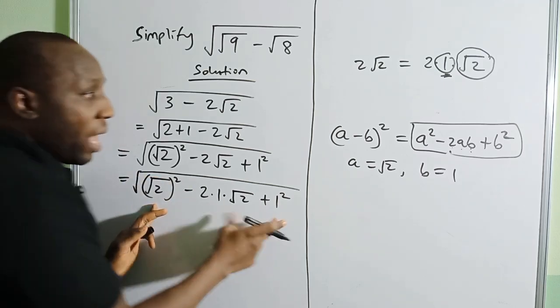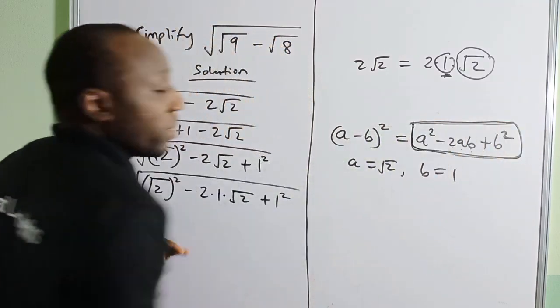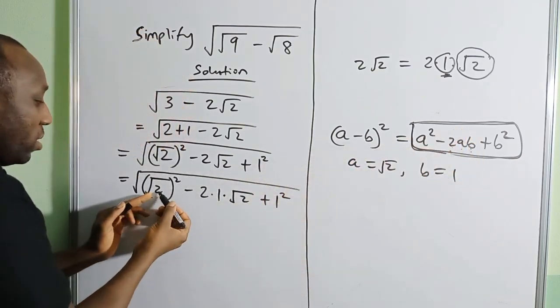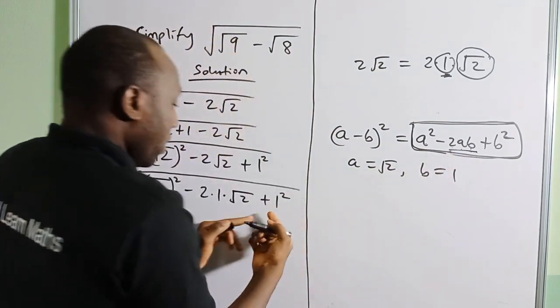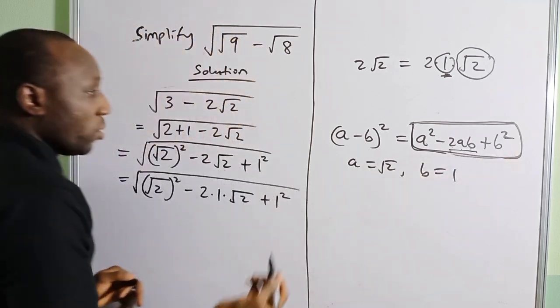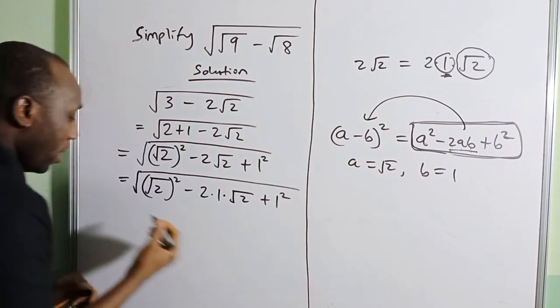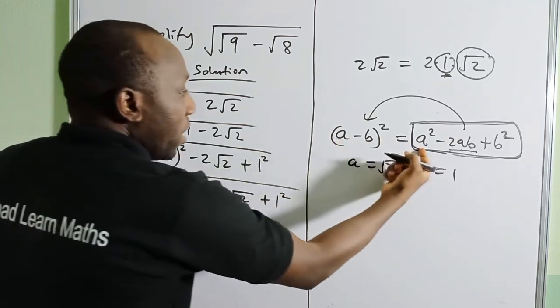Now if you compare this expression in the square root to the algebraic identity, you see they are comparable. So I want to transfer from this form to that form. This is going to be the first and the last, so that's (a - b). a is √2 and b is 1, so that would be (√2 - 1)².